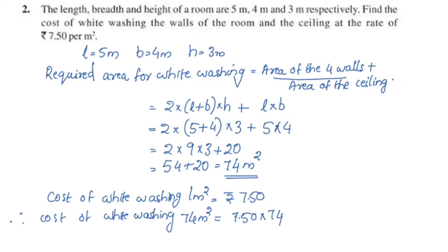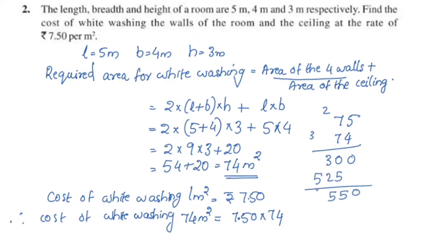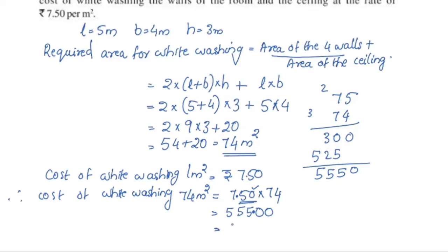Multiplying: 74 into 7.50. Working through the multiplication — 5 fours are 20, carry 2; the decimal point is 2 digits. The result is 555. The cost is Rs. 555.